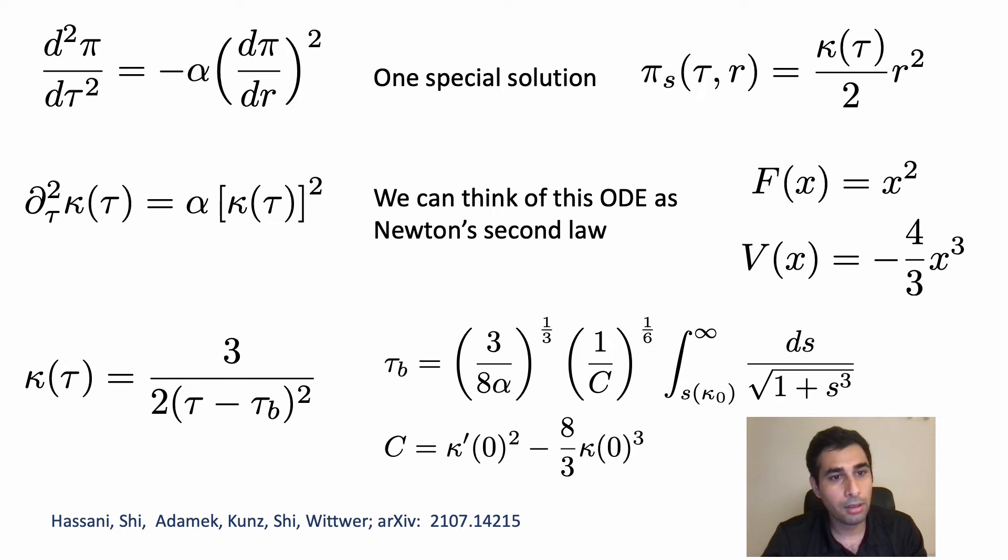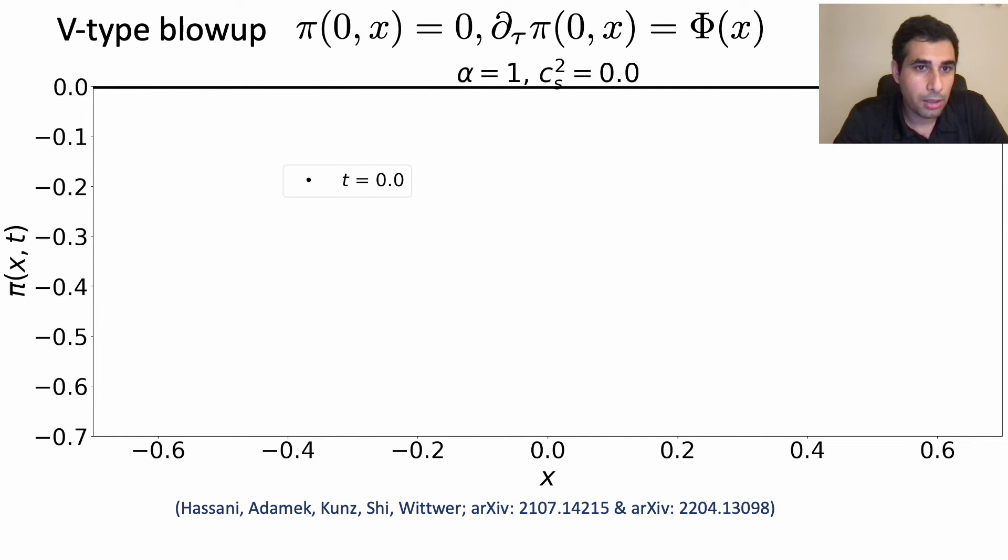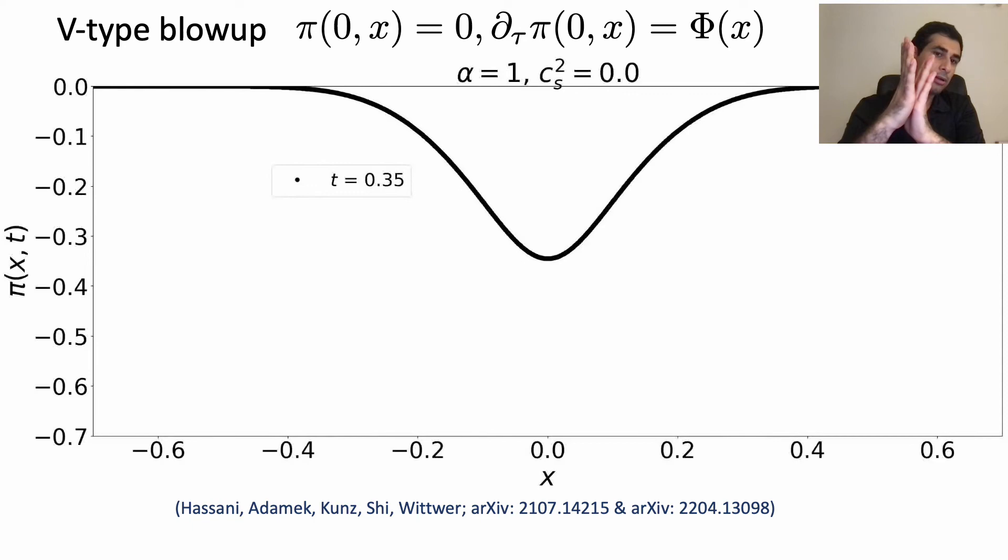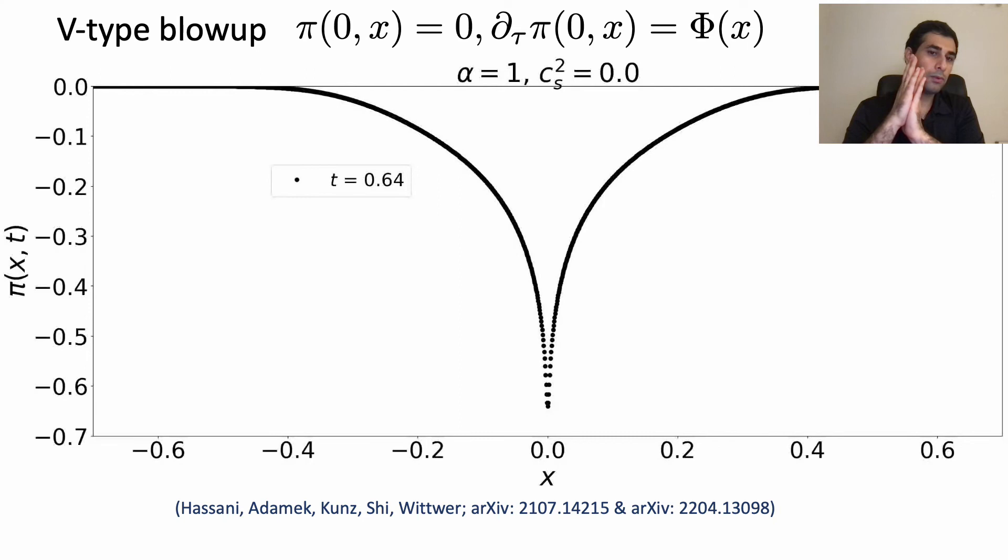And when we solve the simplified equation in one plus one numerically, considering some initial conditions, but really the initial conditions do not matter as far as we have the speed of sound equal to zero. What we see is that the minimum becomes sharper and sharper and at some time the curvature goes to infinity and becomes very super sharp.